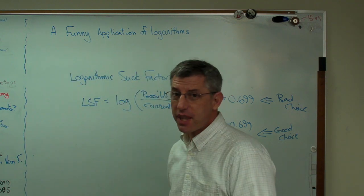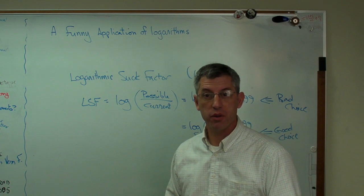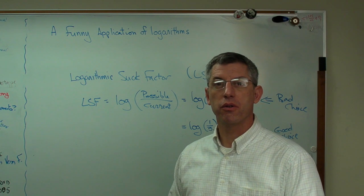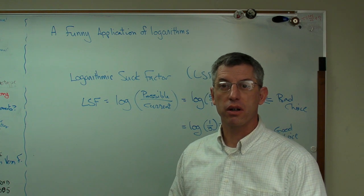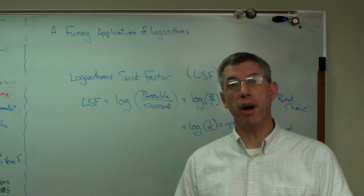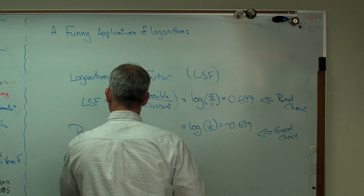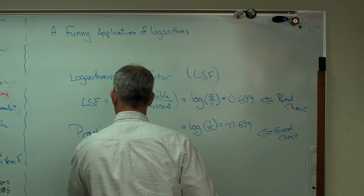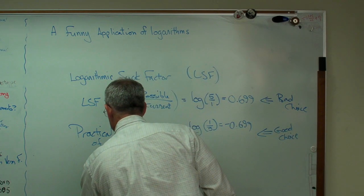Now, if you have a 10 to 1 ratio, potential choice is 10 times worse. Well, base 10 log of 10 is 1. So, your logarithmic suck factor would be 1, and let's say your possible choice is 10 times better than your default choice. That would be .1, and it gives you a logarithmic suck factor of minus 1. So, once you get your practical range, I can't believe I'm doing this,